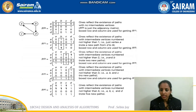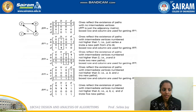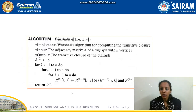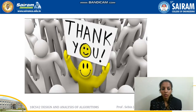The transitive closure shows there is a path from a to a, a to b, a to c, a to d, b to a, b to b, b to c, b to d. Since vertex c has no outgoing edges, certain entries are zero. This is the algorithm: R^k[i][j] = R^(k-1)[i][j] OR (R^(k-1)[i][k] AND R^(k-1)[k][j]). That is Warshall's algorithm.